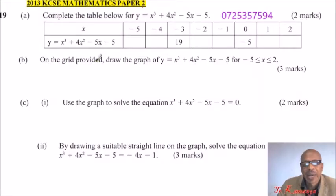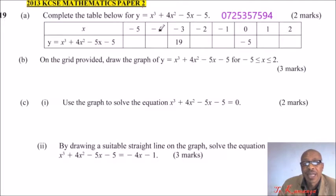This is question number 19, 2013 KCAC mathematics paper 2. We are told to complete the table below for y equals x cubed plus 4x squared minus 5x minus 5.